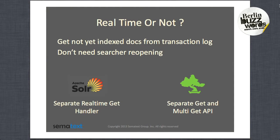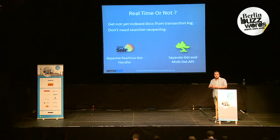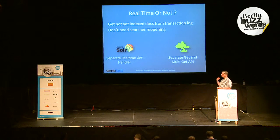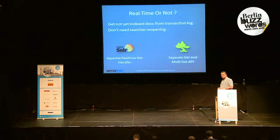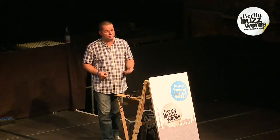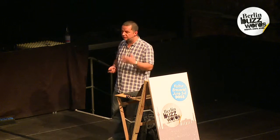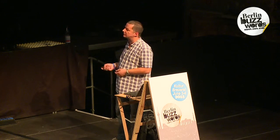Both Solr 4.0 and Elasticsearch provide real-time handlers. In order to see documents in Lucene, you need to refresh the searcher. Real-time comes in handy because you don't need searcher reopening — you can read documents that were just sent for indexing, because they are read from the transaction log. In case of Solr, you have a separate real-time get handler, configured by default in solrconfig.xml. In Elasticsearch, we have the multi-get API and get API that allow us to fetch documents even if they have not yet been indexed.